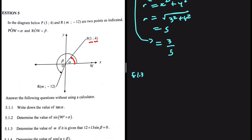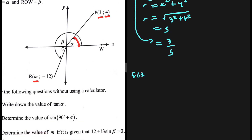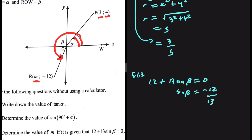Thus we get 5.1.3: determine the values of m if 12 plus 13 sine of v equals 0. We're looking for the value of m on our coordinates using angle v. We have 12 plus 13 sine of v equals 0, so sine of v equals minus 12 divided by 13. Since sine equals the opposite over the hypotenuse, the opposite is y equals minus 12 and the hypotenuse is 13.